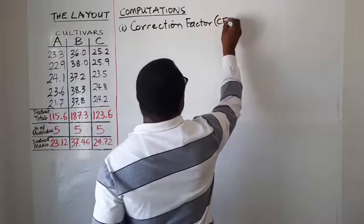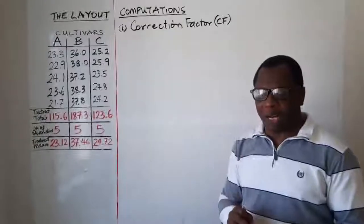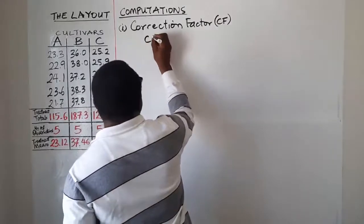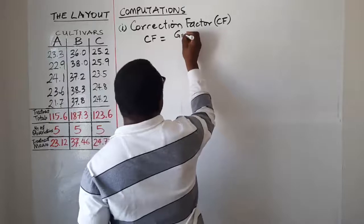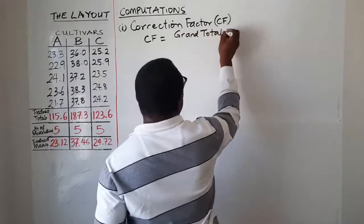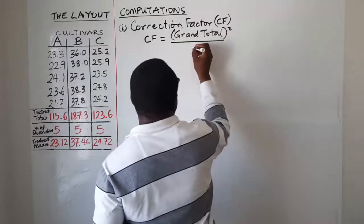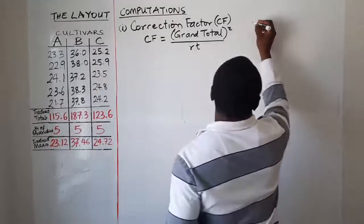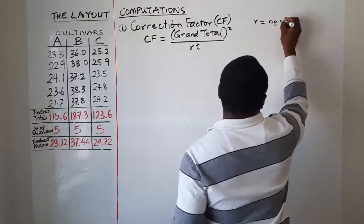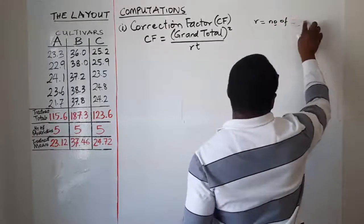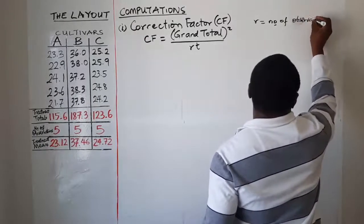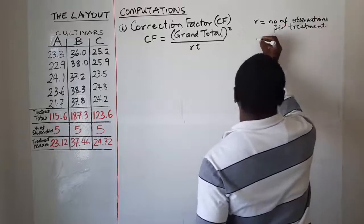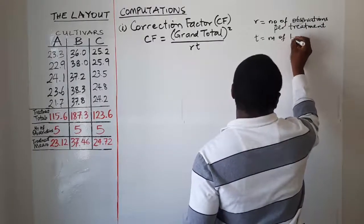The correction factor is normally abbreviated as CF. It has a simple formula: CF equals the grand total squared, all over r times t. Here, r stands for the number of observations per treatment.